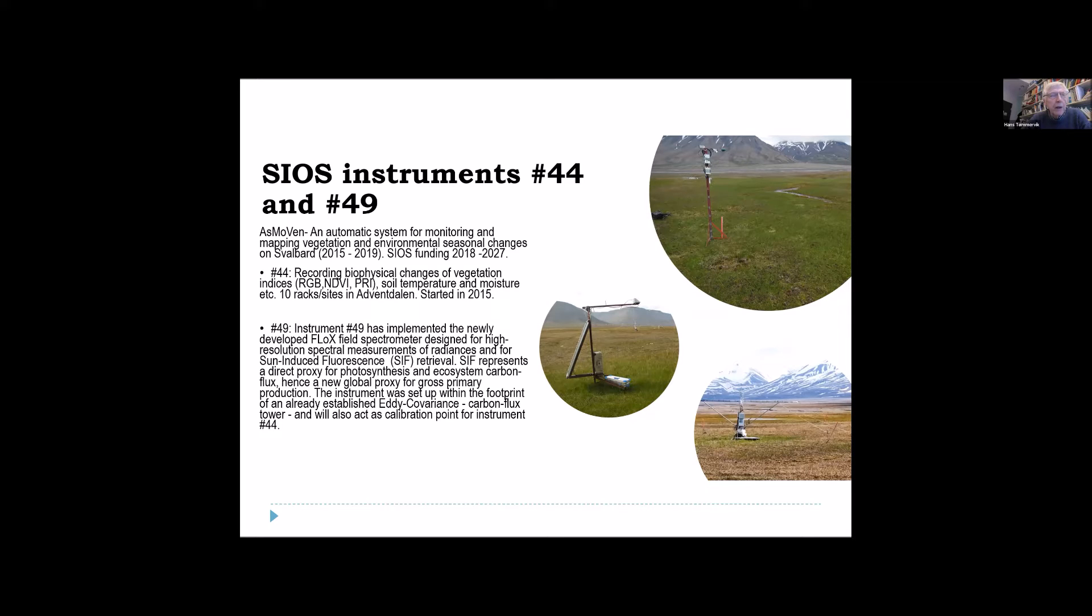This is a very high resolution field spectrometer designed for high resolution spectrometer measurements, for radiances and for sun-induced fluorescence. And the sun-induced fluorescence represents a direct proxy for photosynthesis and ecosystem carbon flux. Hence, it is a new global proxy for gross primary production. And this instrument is set up within the footprint of the already established eddy covariance tower in Adventdalen, run by University of Lund in Sweden.